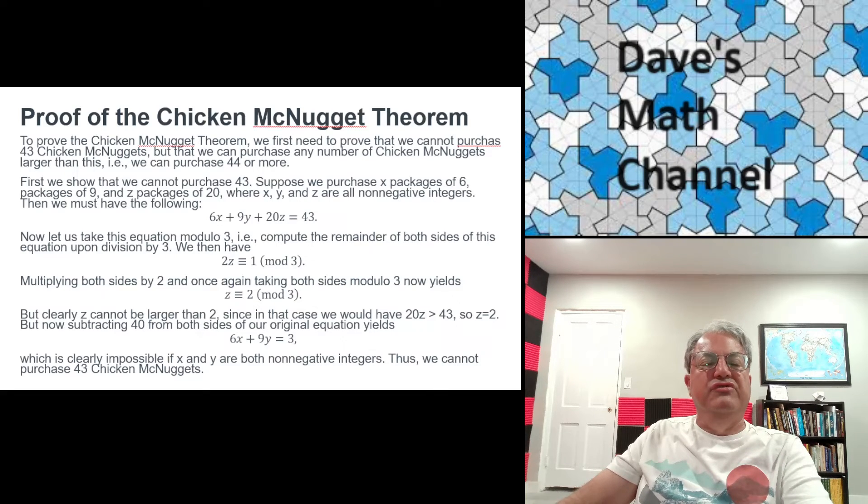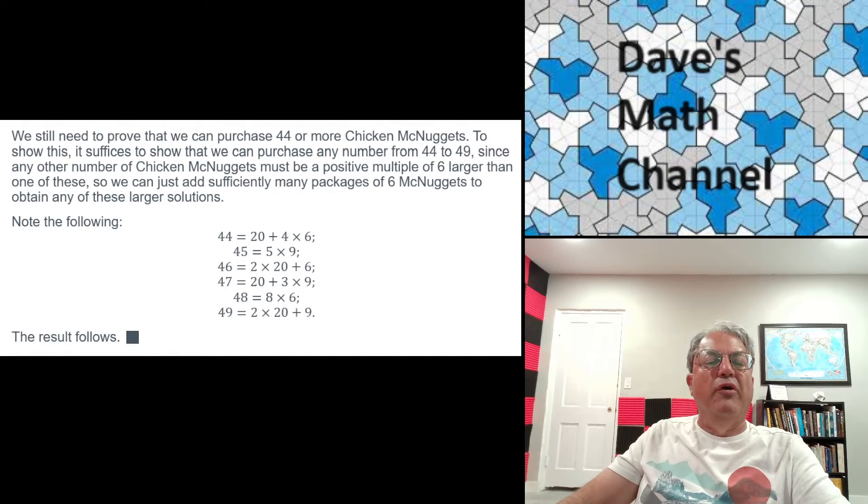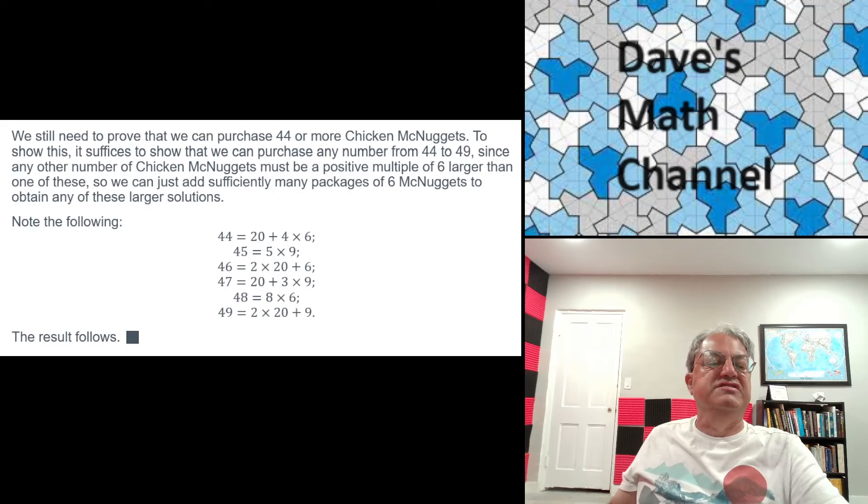But that's not the complete proof, unfortunately. We also have to prove that we can purchase any number of McNuggets, 44 or more. So how do we do that? That's not too hard either. So to prove that you can purchase 44 or more, it suffices to show that you can purchase any number from 44 to 49. Why is that? Because if it's any larger number, you can just add a multiple of 6 to any of these solutions.